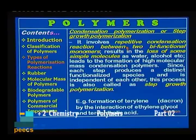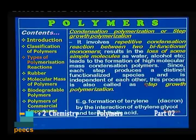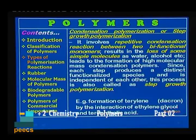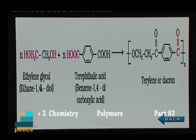Next is condensation polymerization or step growth polymerization. It involves repetitive condensation reactions between two bifunctional monomers, resulting in the loss of small molecules such as water or alcohol. It leads to the formation of high molecular mass condensation polymers. Since each step produces a distinct functional species and is independent of each other, this process is also called step growth polymerization. Example: formation of terrylene or dacron by the interaction of ethylene glycol and terephthalic acid (benzene-1,4-dicarboxylic acid).